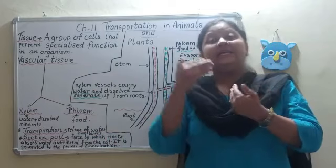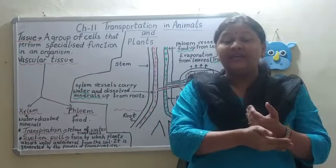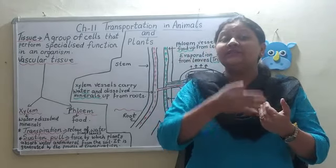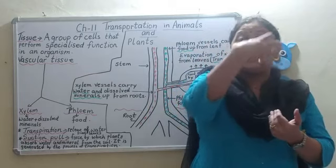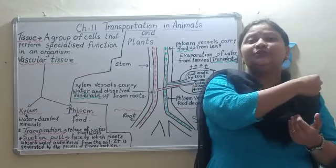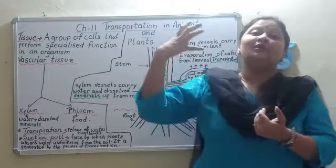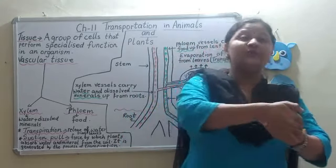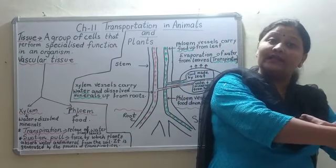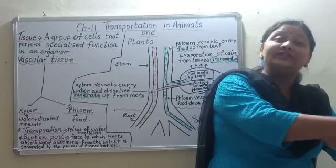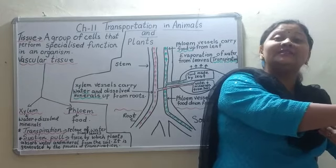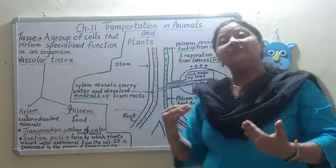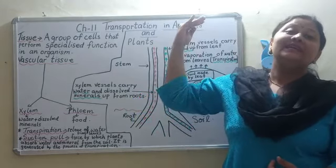Now, root has root hairs in it. In photosynthesis we have already studied that root hairs absorb the water and the dissolved mineral nutrients, which reaches the leaves for the process of photosynthesis. Root hairs are already in the soil, where water and dissolved mineral nutrients are absorbed and through the root they will reach the leaves.